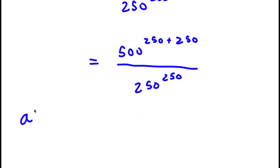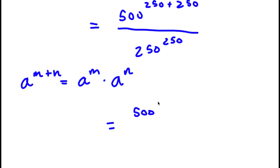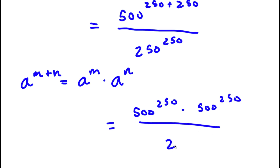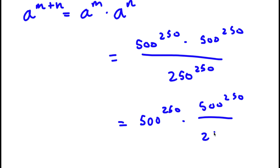If I have something in the form a to the power of m plus n, this is simply equal to a to the power of m times a to the power of n. So 500 to the power of 250 plus 250 equals 500 to the power of 250 times 500 to the power of 250. Now I have this over 250 to the power of 250, giving 500 to the power of 250 times 500 to the power of 250, over 250 to the power of 250.